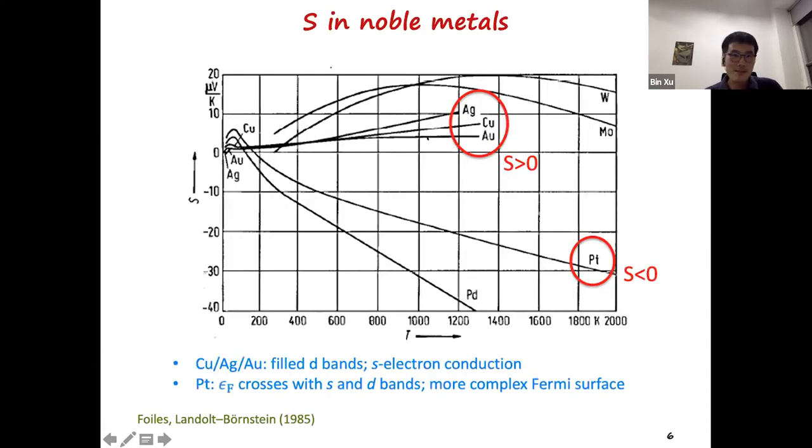How about noble metals? For these noble metals, they are all actually good conductors. And silver, gold, and copper, they have also filled d-bands and only S electron for conduction. But their Seebeck coefficient is actually positive, which is abnormal. In platinum, platinum has Fermi level cross with the S and d-bands. And it has a more complex Fermi surface. But it has mostly, at most temperature, it has a negative Seebeck coefficient, which we can say is a normal metal.